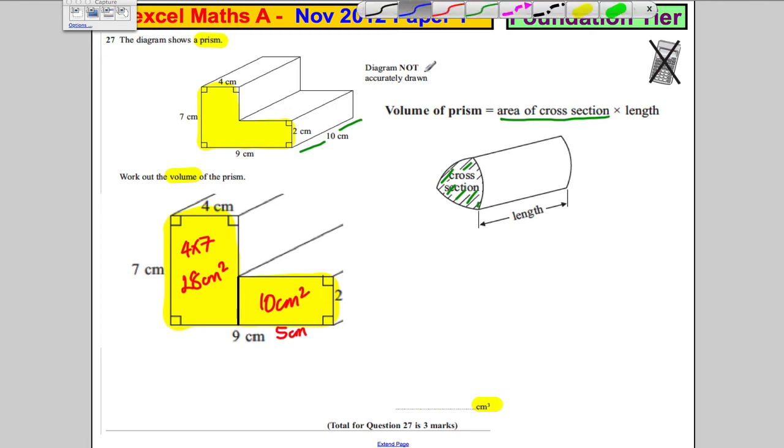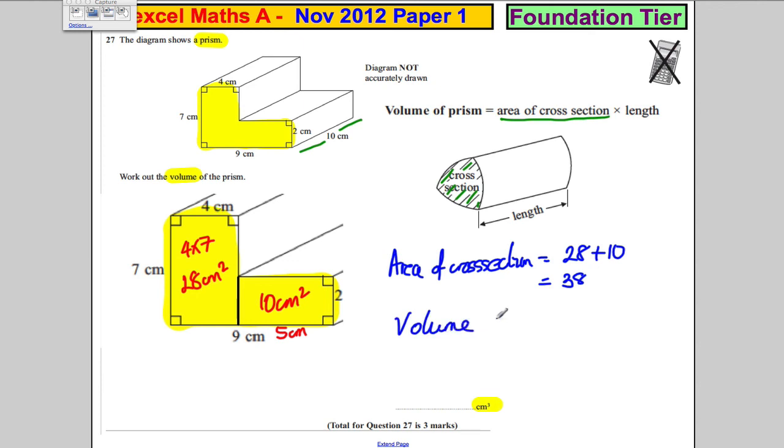Therefore, the area of cross-section equals 28 plus 10, which is 38 centimeters squared. Multiply that by 10, so the volume is 38 times 10, which equals 380 centimeters cubed.